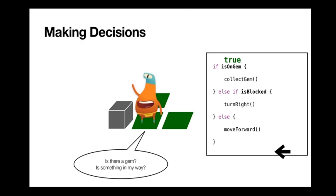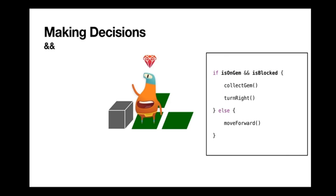This is what we've done before with conditional coding. But in this case the code has a bug, because I am blocked and I want to run some code if I'm blocked. All I did was collect the gem, which is good, but I'm not going to be able to move forward without turning right. This is where our AND logical operator comes in. I could write code that says: if I'm on a gem AND I'm blocked — if both of those are true — then I'll collect the gem and turn right; otherwise I'll just move forward.